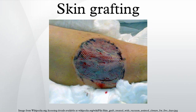Skin grafting is a type of graft surgery involving the transplantation of skin. The transplanted tissue is called a skin graft. Skin grafting is often used to treat extensive wounding or trauma, burns, areas of extensive skin loss due to infection such as necrotizing fasciitis or purpura fulminans, and specific surgeries that may require skin grafts for healing to occur. Most commonly, removal of skin cancers. Skin grafts are often employed after serious injuries when some of the body's skin is damaged, and surgical removal of the damaged skin is followed by skin grafting.